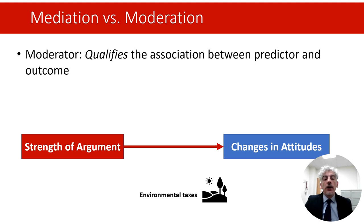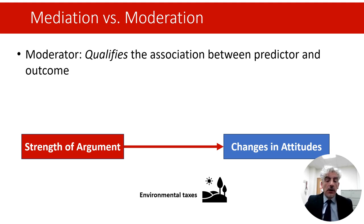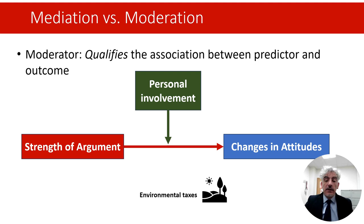I'll provide a simple example here. We can manipulate the strength of an argument in favour of environmental taxes — for example, highlighting key benefits that may accrue from a policy of increasing environmental taxes — and we can then test if stronger arguments influence changes in attitudes of the participants. Stronger arguments may lead to greater changes in attitudes. However, the relation between strength of the argument and changes in attitudes may depend on how much an individual is personally engaged with these issues. People that are more engaged will consider the arguments more attentively and carefully, and because of the deeper processing of the messages, they may be more influenced by the strength of the argument.